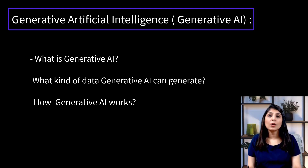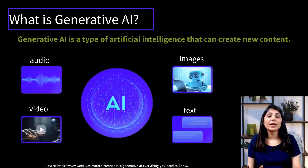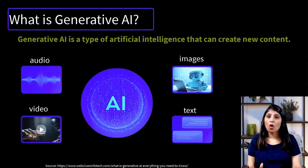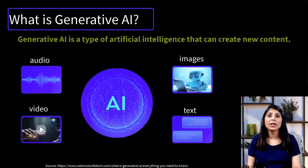Let's start with what is generative AI. Generative AI can generate new content which can be images, text, audios, and videos. These generative AI models learn from the data they are trained on to create entirely new content by understanding the patterns and structures within that data.